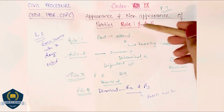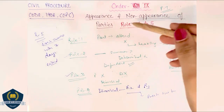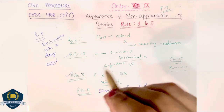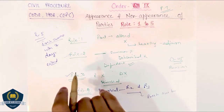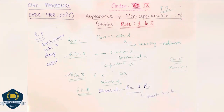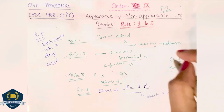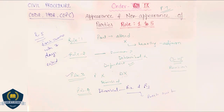This is about the information from Rule 1 to 5 of Order 9. All the rules are very very important — again I am saying, prelims can test these rules, don't skip any rule. In the next session we are going to discuss a very very important topic, that is Rule 6, in which we will discuss ex-parte decree. Till then, have a good day, thank you.